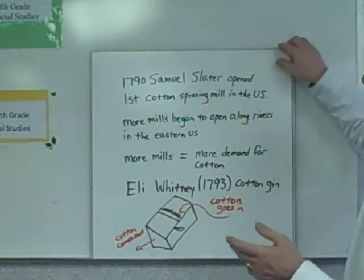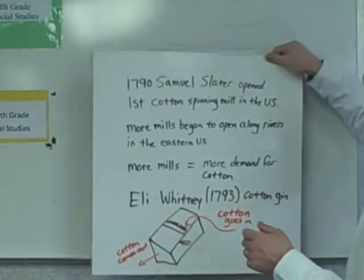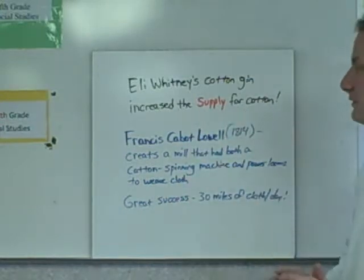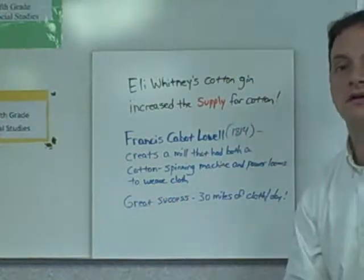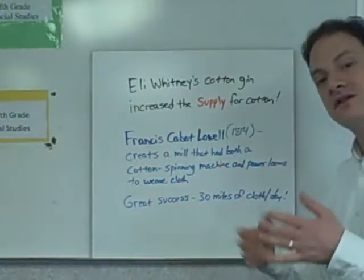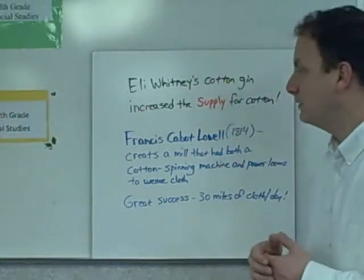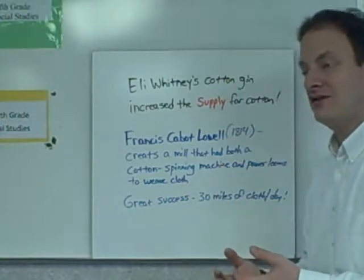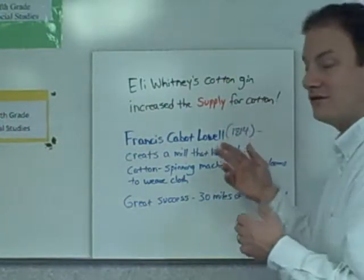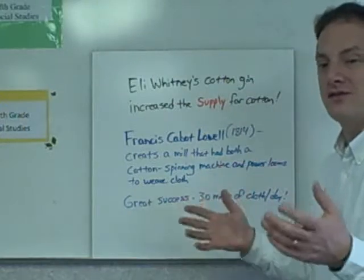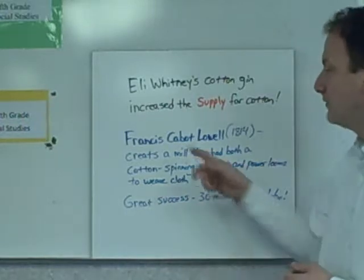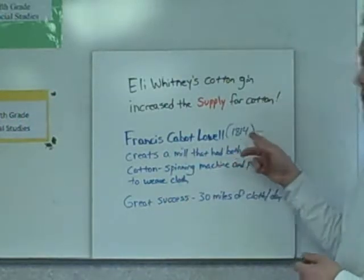However, Whitney's cotton gin actually increased the supply of cotton. This machine allowed slaves to clean cotton faster, so now they could pick and process even more cotton. Although it did a wonderful job, it increased the supply of cotton — not really what Whitney wanted. We'll get to that in the next lesson.